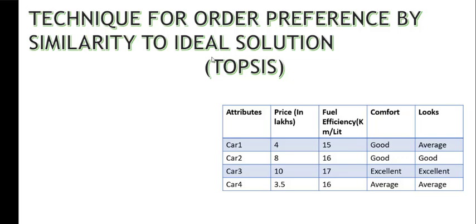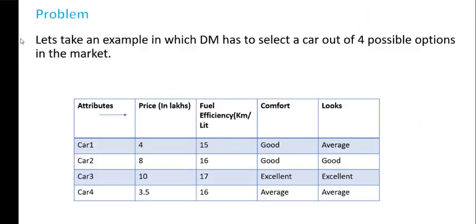The steps involved in the TOPSIS method we will understand with the help of a problem. In this problem, a decision maker has been given 4 options and on the basis of 4 attributes the decision maker has to select 1 car. So we will solve this problem using TOPSIS method step by step.